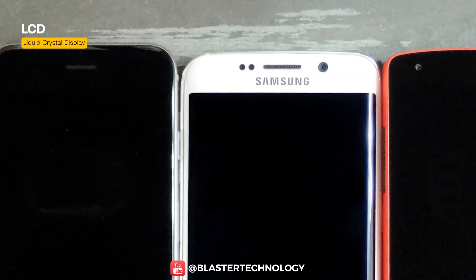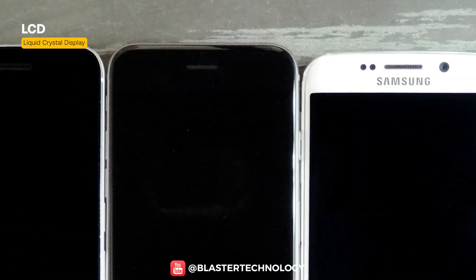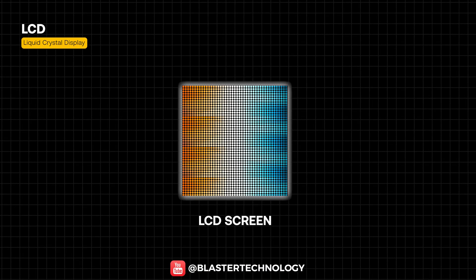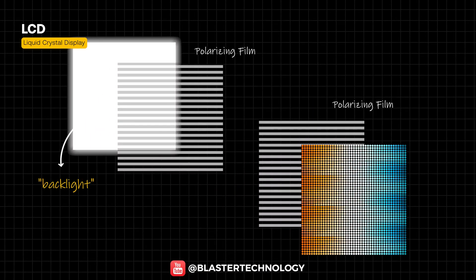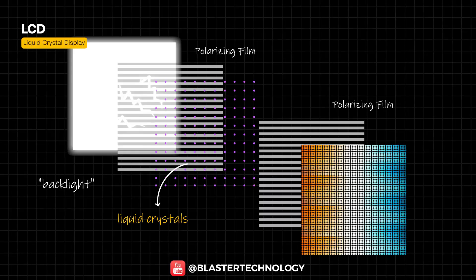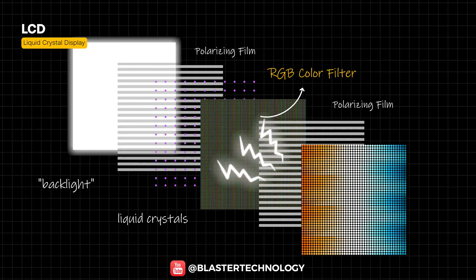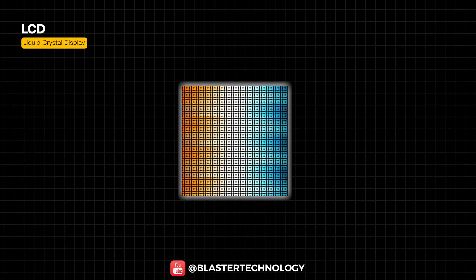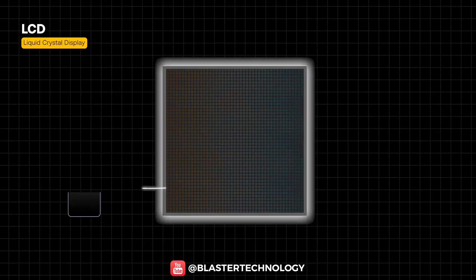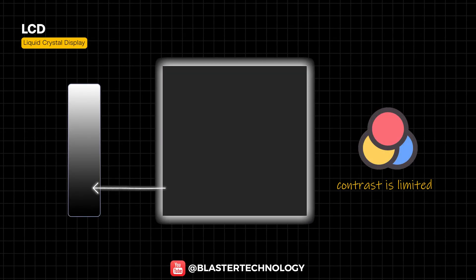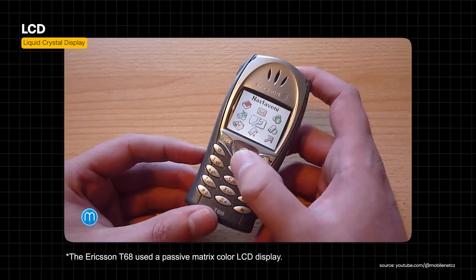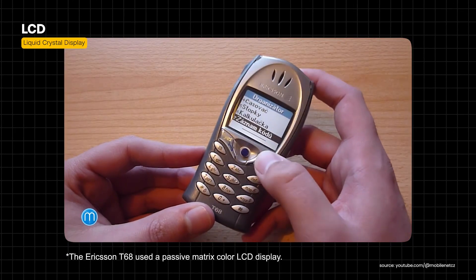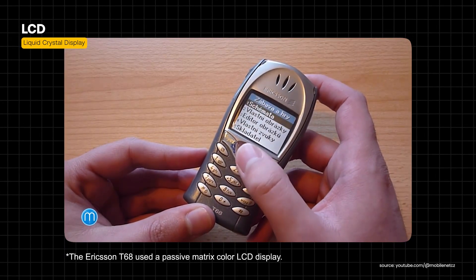LCD displays represent the foundation on which most smartphone screens were built for more than a decade. An LCD screen uses a rear light source, known as a backlight, while liquid crystals control how this light passes through red, green, and blue subpixels to form the image. Because the backlight is always on, blacks are not truly black and contrast is more limited. On the other hand, LCD screens are stable, do not suffer from burn-in, and can deliver good brightness levels.